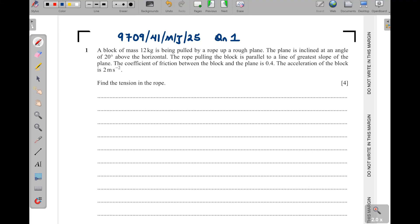Question number one is coming from motion on an inclined plane. A block of mass 12 kilograms is being pulled by a rope up a rough plane. The plane is inclined at an angle of 20 degrees above the horizontal and the rope pulling the block is